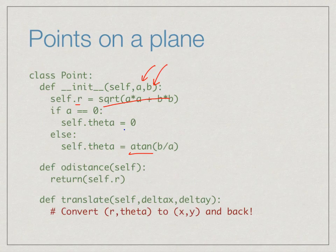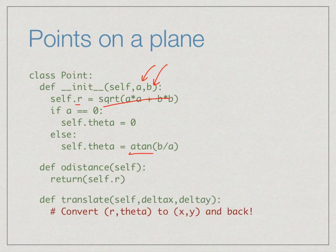This is useful because if we want the origin distance, we just return the r value without any computation. If we are going to use o_distance very often, it is better to do the square root calculation once at the beginning when we set up the point, and then simply return r whenever we want the distance from the origin.